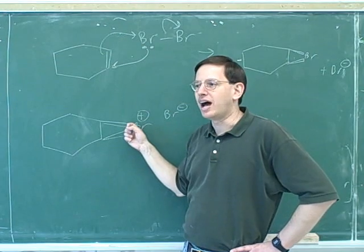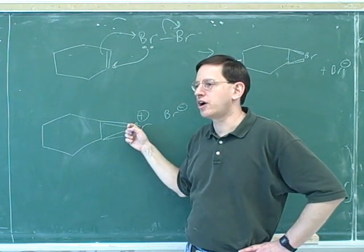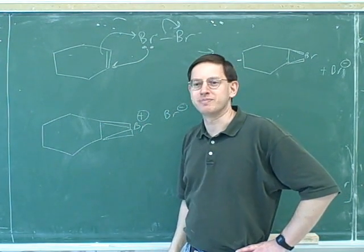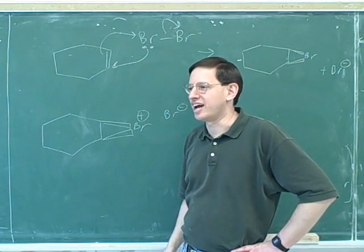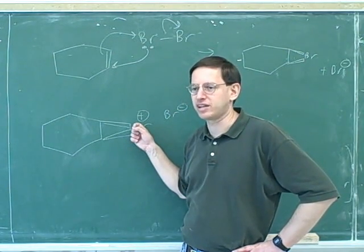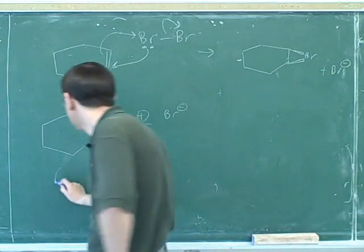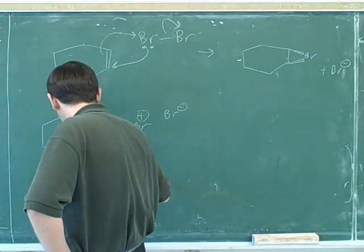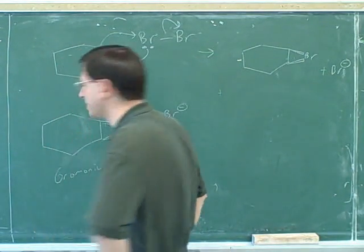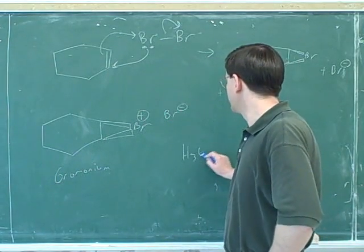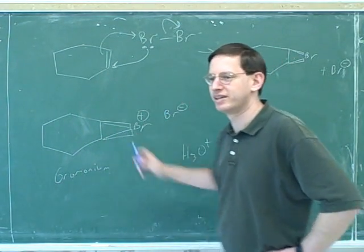So this is called a cyclic intermediate. This is not called bromine. Since it's charged, it's called bromonium. When you have a charged ion, that's called an onium. So this is bromonium, a cyclic bromonium ion. So you guys should already be familiar with hydronium. And this is bromonium.